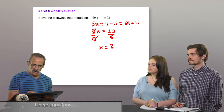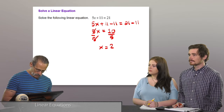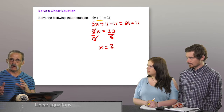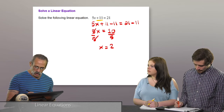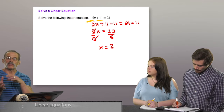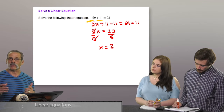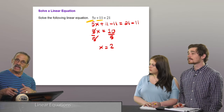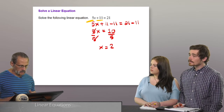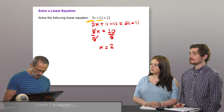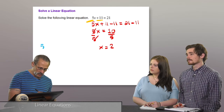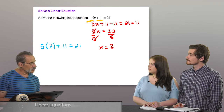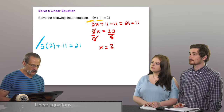We can check: 5(2) + 11 = 10 + 11 = 21. Correct! The key pattern: if there's a plus 11, subtract 11 from both sides; if there's a negative 11, add 11 to both sides. If x is multiplied by 5, divide both sides by 5; if x is divided by 5, multiply both sides by 5. Always do the inverse operation.